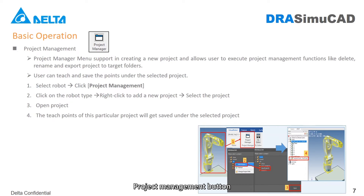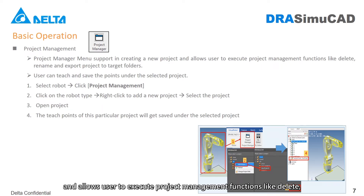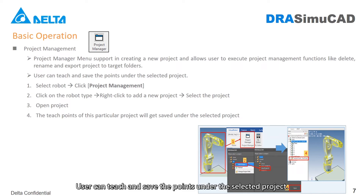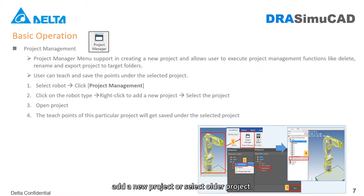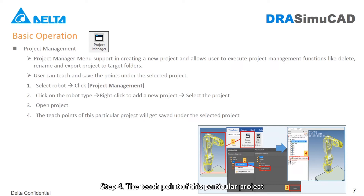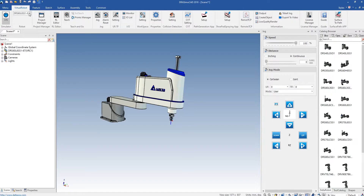Project Management Button: The Project Manager menu supports creating a new project and allows users to execute project management functions like delete, rename, and export project to target folders. Users can teach and save points under the selected project. Operation steps: Step 1, select robot and click Project Management. Step 2, click on the robot type and right-click to add a new project or select an older project. Step 3, open project. Step 4, the teach point of this particular project will get saved under the selected project. Demo video as follows.